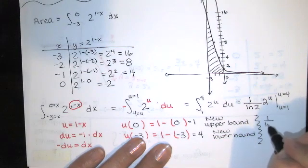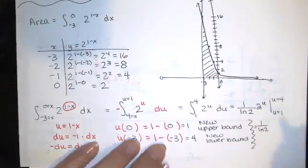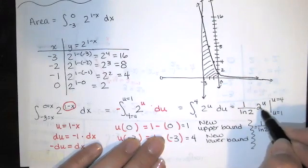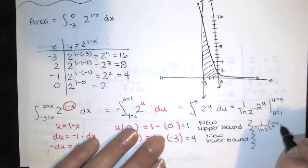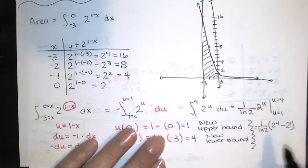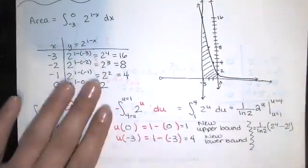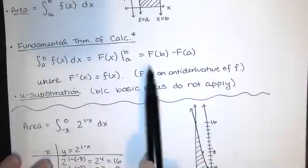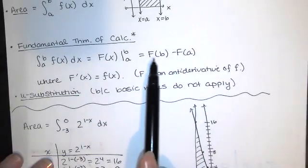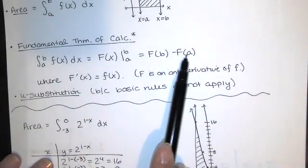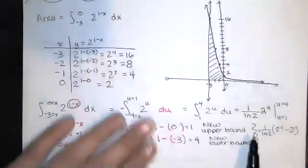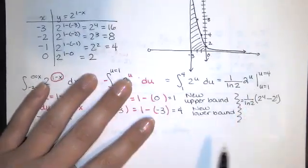And 1 over ln(2) is a constant, so I'm going to bring that out. And then I'll have 2^4 minus 2^1. And that step right there corresponds to that step right there. I'm just plugging in 4. I'm plugging in 1. And I'm subtracting. And I just happen to factor out that constant.